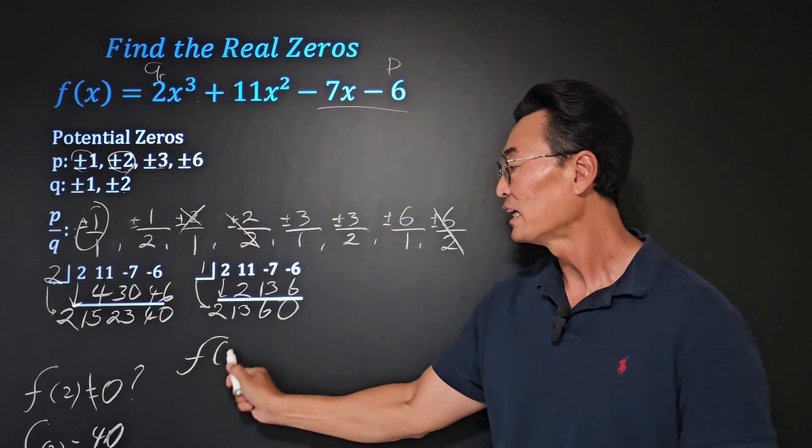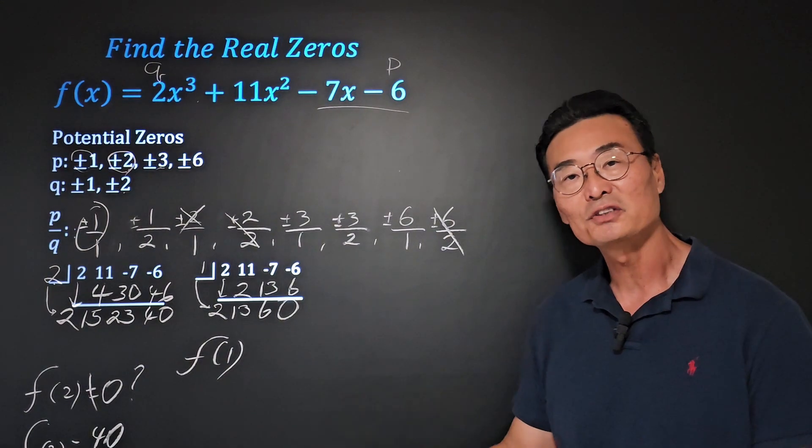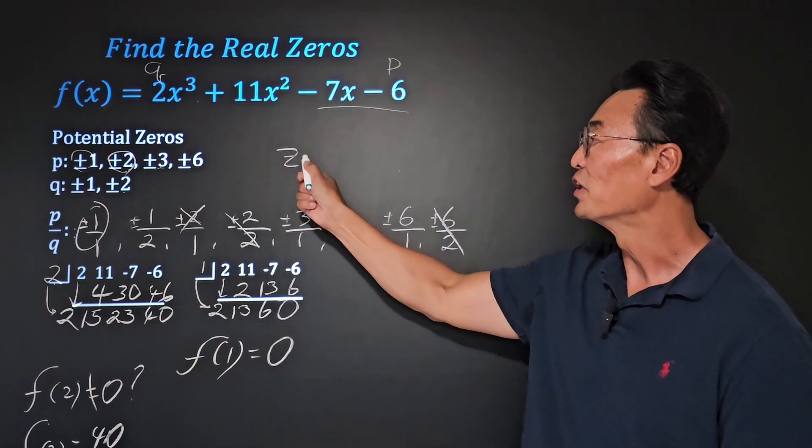What does that mean? It means that if we were to take f of 1, or take the 1, plug it into the function, we'll get a 0. So there you go, 1 is going to be one of the real zeros of this polynomial function.